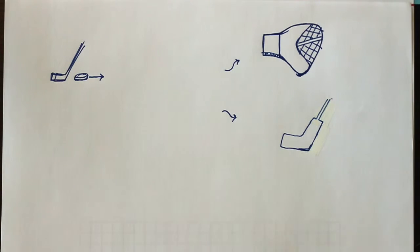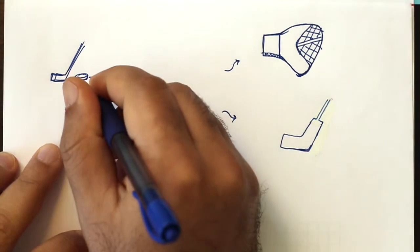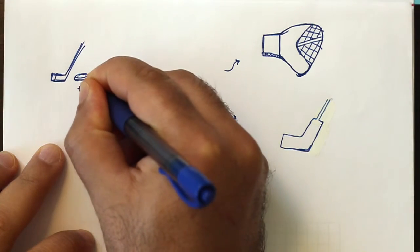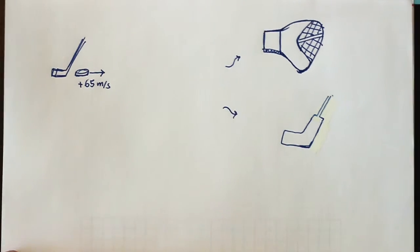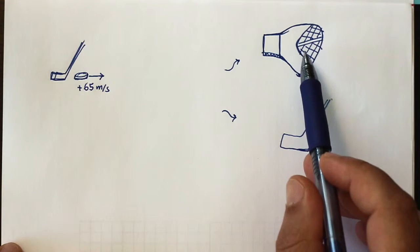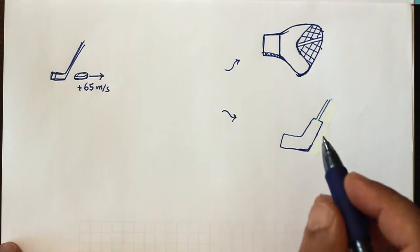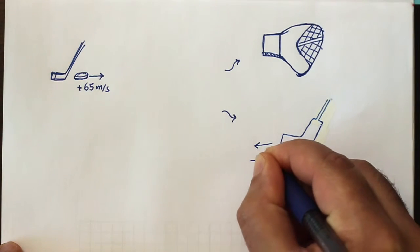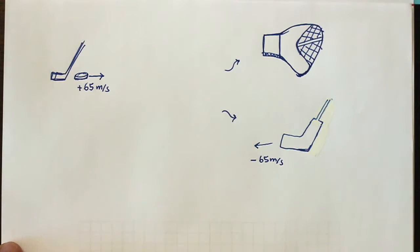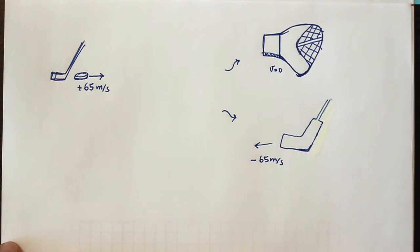Here's a problem in which a puck is being shot at a goalie. It's being shot at a velocity of 65 meters per second in some positive direction. Then we're told that one of two things happen: either the goalie stops it with his glove, or he shoots it back with his stick at a velocity of minus 65 meters per second — exactly the opposite direction. If he stops it with his glove, then the final velocity is zero.